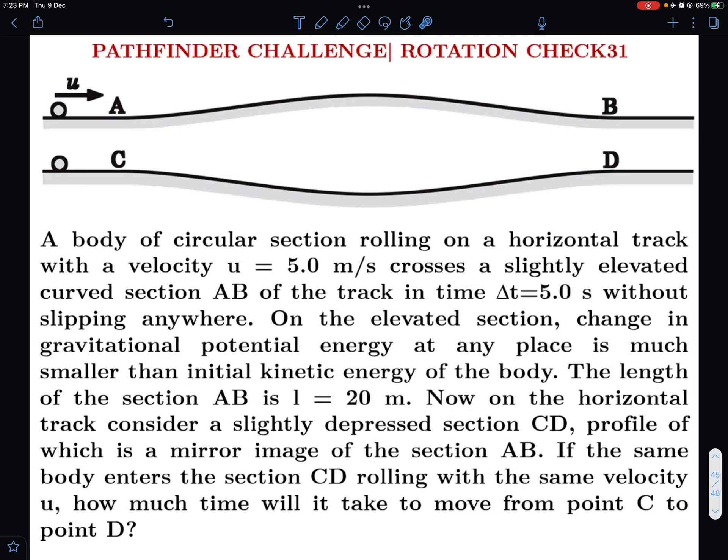So this is a body that has got a circular section. It is not given whether it's a solid cylinder, or it could be cylindrical shell also. The mass distribution is not exactly known, but it has got a circular section. So its speed is given and it crosses from A to B in 5 seconds. And this section is only very slightly elevated, so we can safely assume that slope is not very large anywhere.